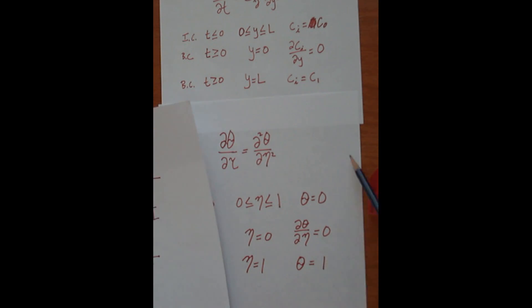And your normalized concentration, since it's C1, plug in C1 here, you've got C1 minus C-naught, C1 minus C-naught equals one.